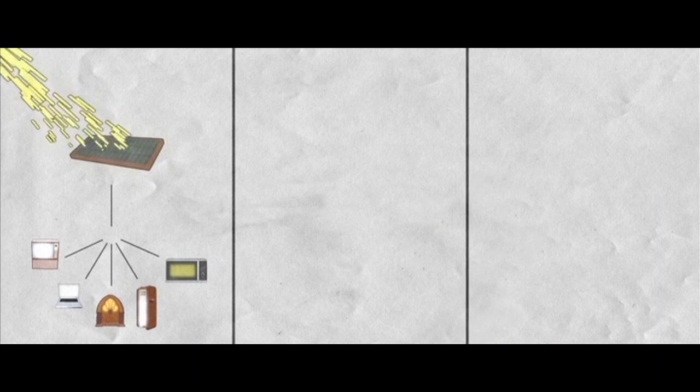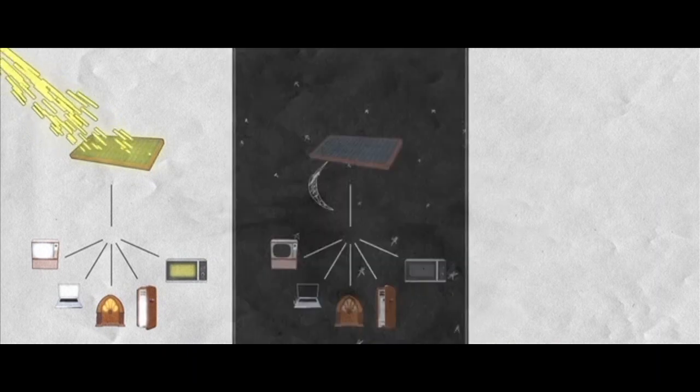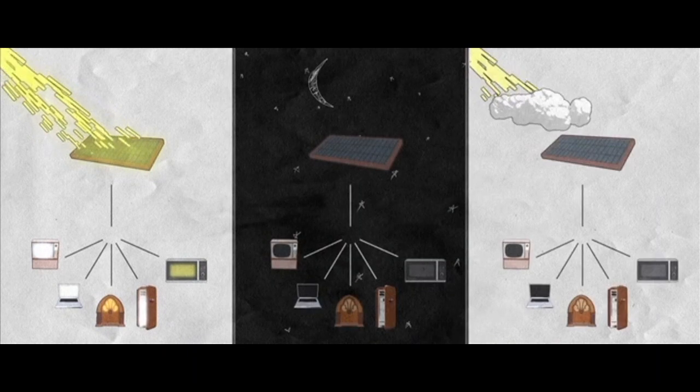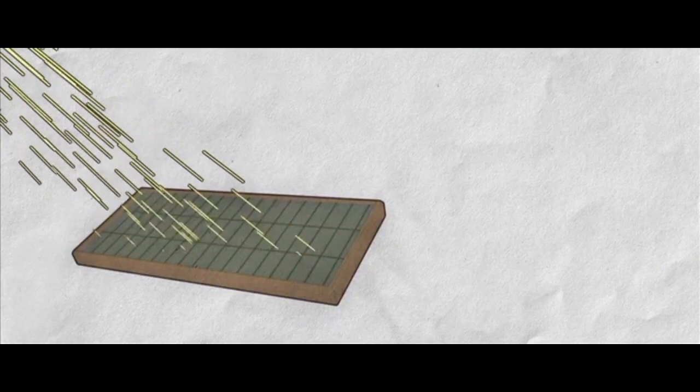Batteries. The energy generated by the solar panels can be used while it's being produced. To have energy during the night and when weather conditions are not optimal, we need to store that energy in batteries.